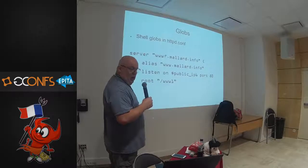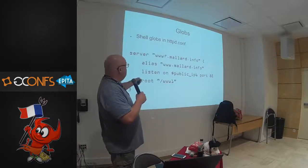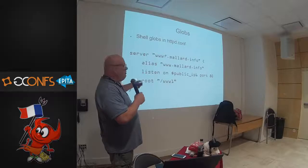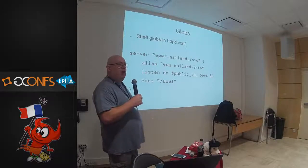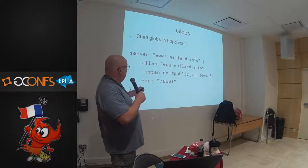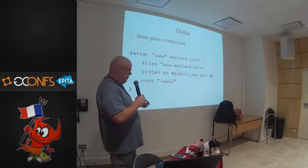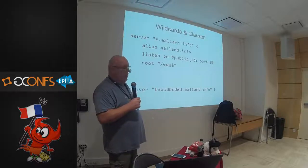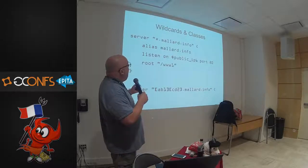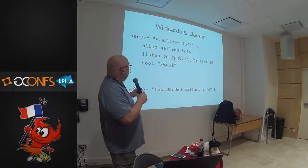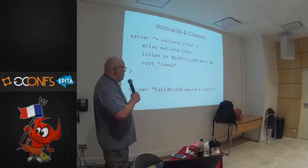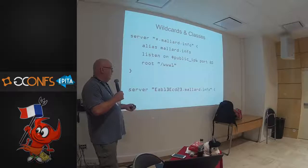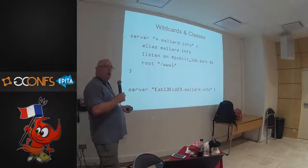You can use globs — standard shell globs. If you have web servers 0 through 9 on your web farm, they can all share a config and share a root directory. You can use wildcards, just like the shell. Here we have any hostname under mallard.info with an alias for plain mallard.info. You can do really complicated, annoying things with this — I don't know why you would want to, but it's an option.